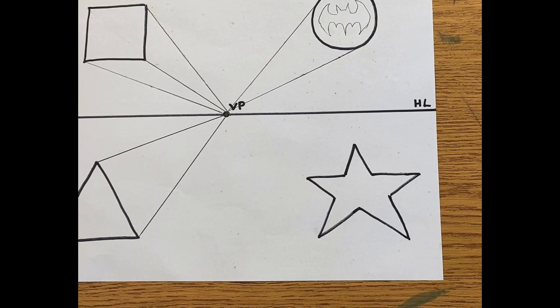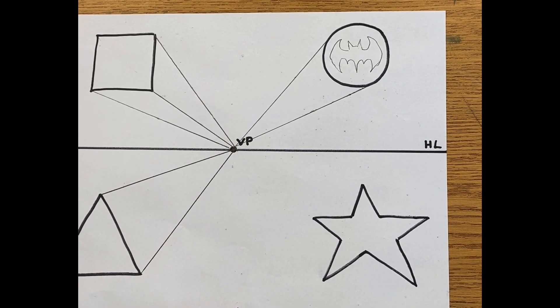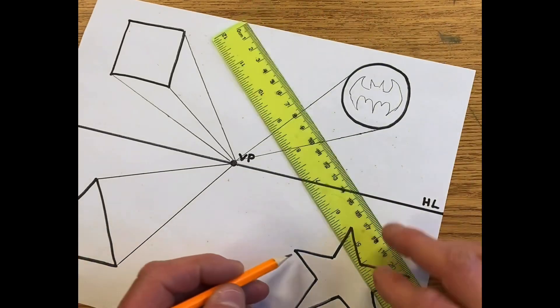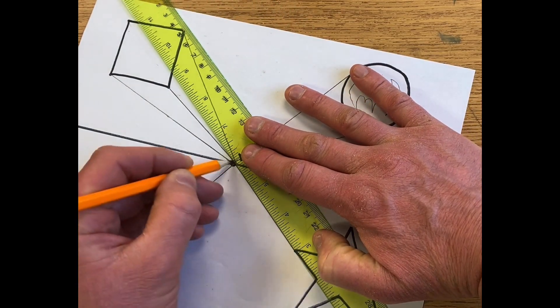Now the last one is a star. This one is a little trickier, it can be a little more confusing. Same concept—I'll start with the points again, going to the vanishing point.